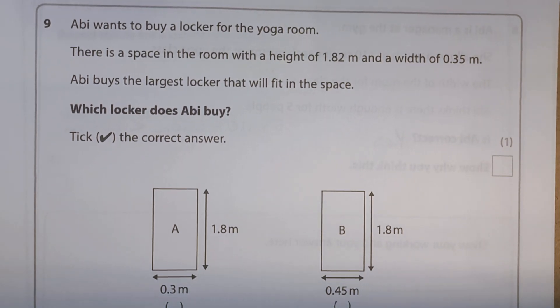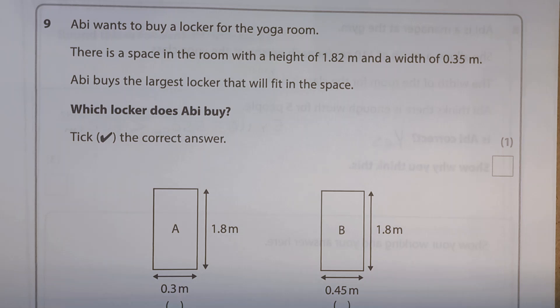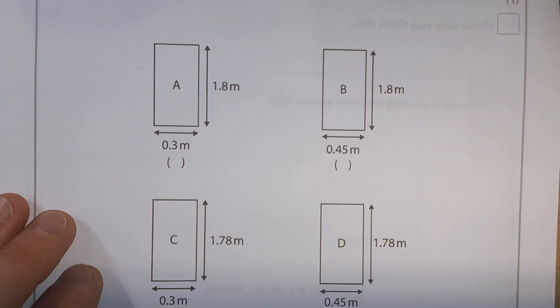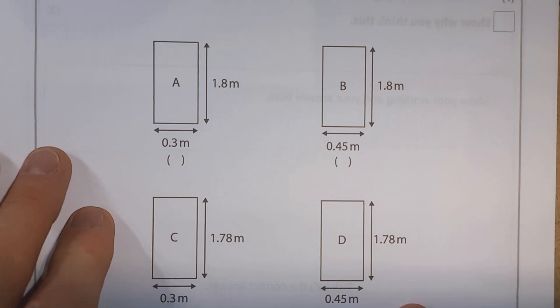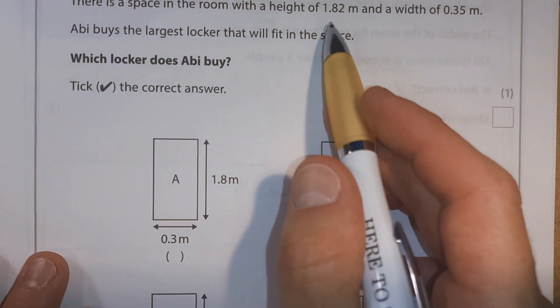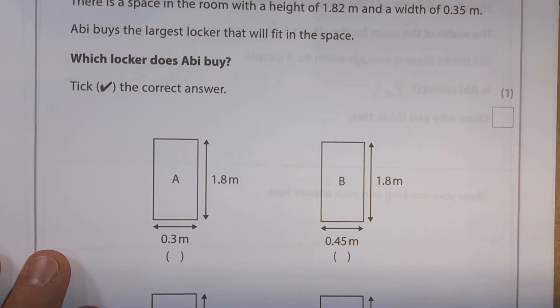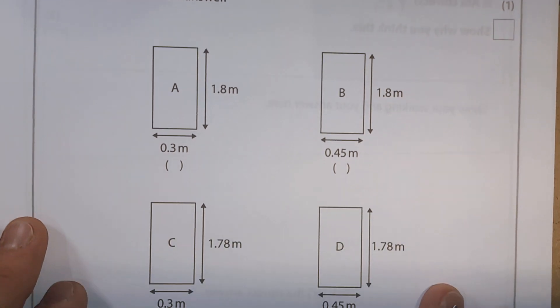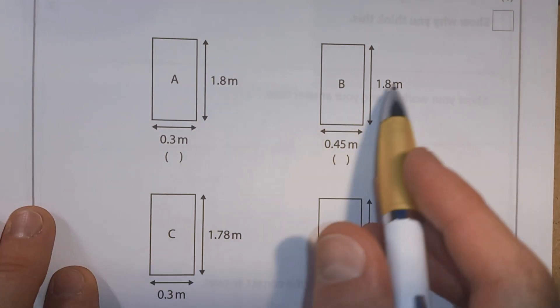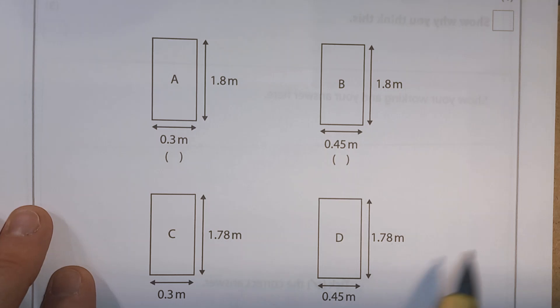Question 9. Abbey wants to buy a locker for the yoga room. There is a space in the room with a height of 1.82 metres and a width of 0.35 metres. Abbey buys the largest locker that will fit in the space. Which locker does Abbey buy? And we've got four lockers to choose from. I'm going to go with one measurement at a time. So the space has a height of 1.82 metres. So is there anything more than 1.82 metres? No, they're all under. So the height isn't a problem.